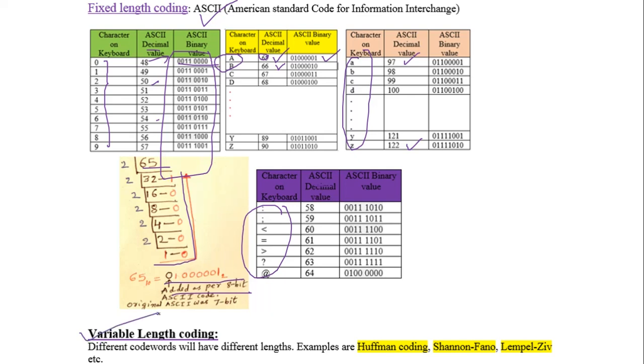In variable length coding, different codewords have different lengths. Examples are Huffman coding, Shannon-Fano, and Lempel-Ziv compression.